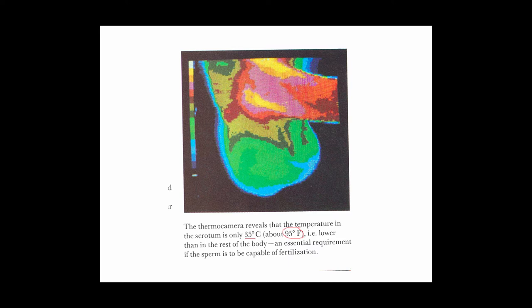The position of the scrotum is under some reflexive control to maintain the healthy temperature that promotes spermatogenesis. When the body gets cold, the scrotum contracts and moves closer to the body to warm up. When the weather is hot, the scrotum descends away from the body to cool off. There is some reflexive control over positioning the testes to maintain that optimal temperature.